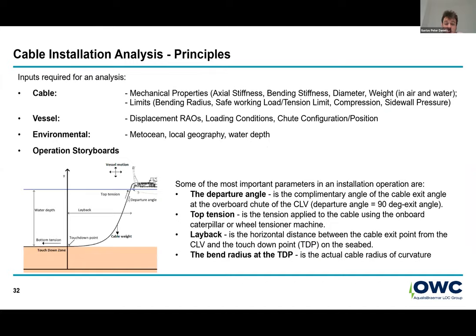For cable installation analysis, we require a few inputs. The most important are the cable itself — generally obtained from the cable supplier. The most important aspects are the mechanical properties: stiffness properties are extremely valuable. High or low stiffness can obviously affect the tension we're seeing at the top. Bending stiffness is really important for the relationship with the minimum bending radius limit. Diameter and weight are also important to determine either the shape of the catenary or the drag that the cable is going to attract.